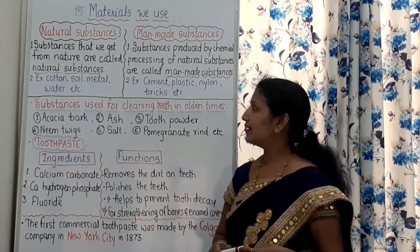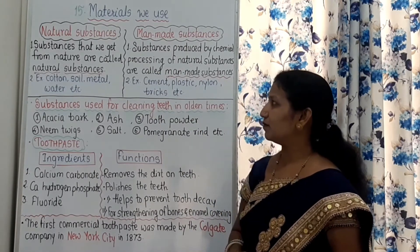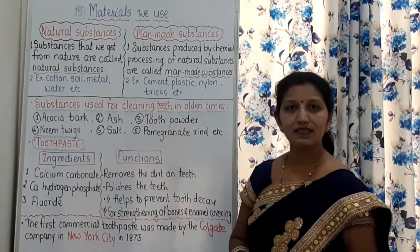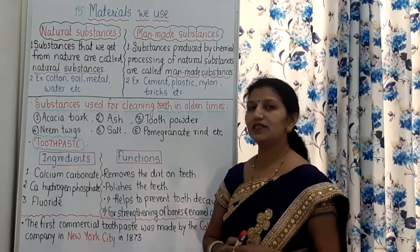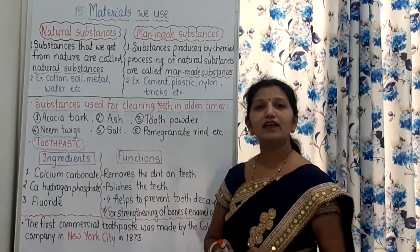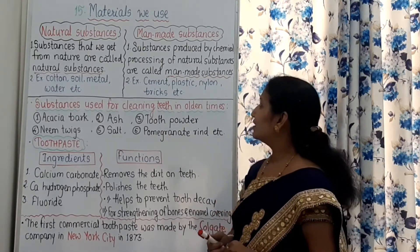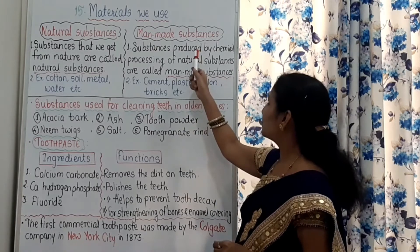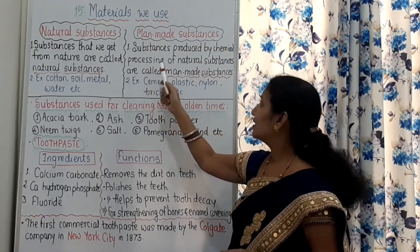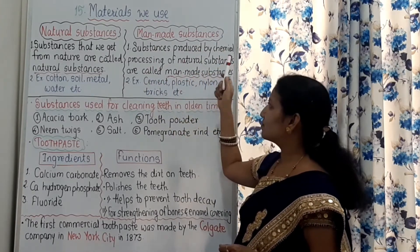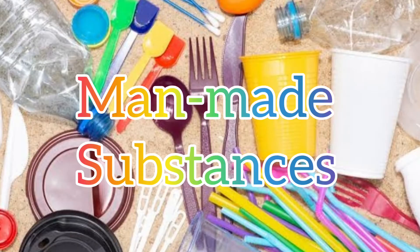First of all, let us see what is the definition of natural substances. Substances that we get from nature are called natural substances. Whereas the substances produced by chemical processing of natural substances are called man-made substances.